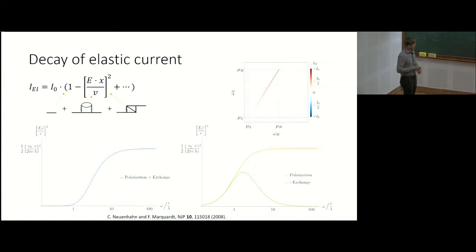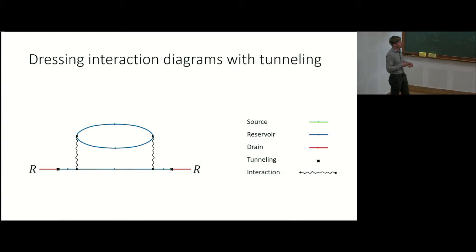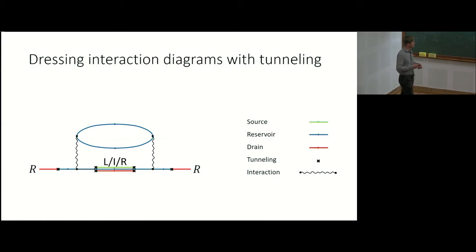Now to the inelastic currents. As an example, this is a polarization diagram describing interactions between electrons in the reservoir region. The diagram is terminated by tunneling through the right lead, because I am calculating the current in the detector or drain. Since I can tunnel from the reservoir region into both the source and the drain, I need to dress the Green's function lines with this tunneling, yielding 27 different diagrams, all describing equilibration processes.